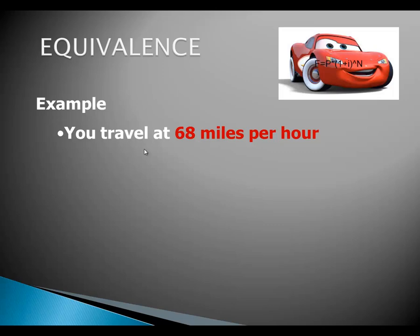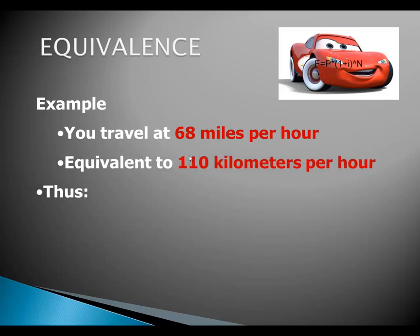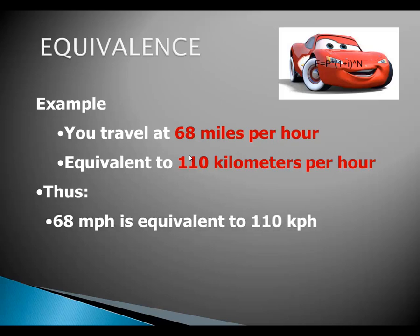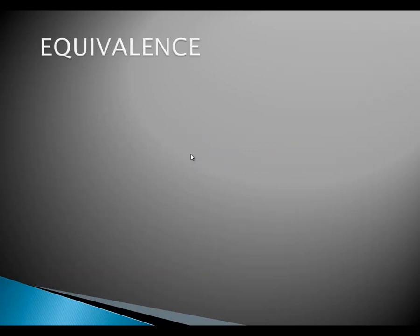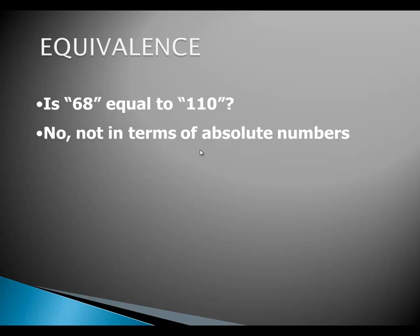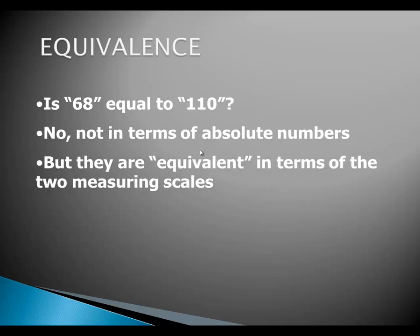You travel at a speed of 68 miles per hour, which is equivalent to 110 kilometers per hour. So we can say that 68 miles per hour is equivalent to 110 kilometers per hour, but we are using two different measuring scales — one in miles and one in kilometers.